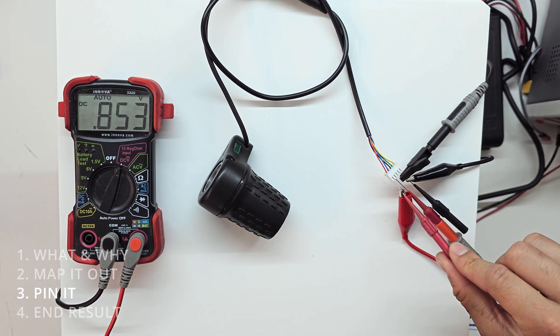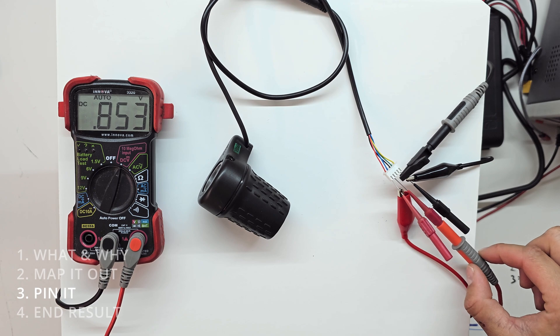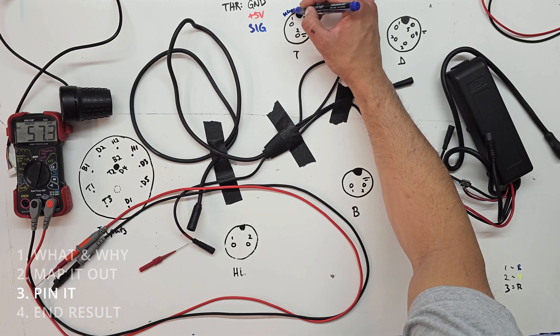So this is the expected behavior of our throttle. So now we know this pin is our plus five. This pin is our signal. And that's it. We're just going to write it down.